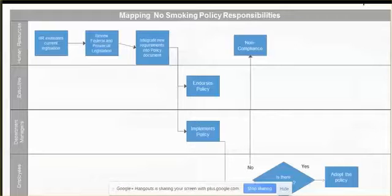So as a simple example, if I was in a research phase and I was mapping a no smoking policy, you'll see on the left hand side my key stakeholders in this are my employees, the department managers, the executive, and human resources. So human resources in this organization, in this policy review, has the key responsibility for many different things, as per those process boxes.